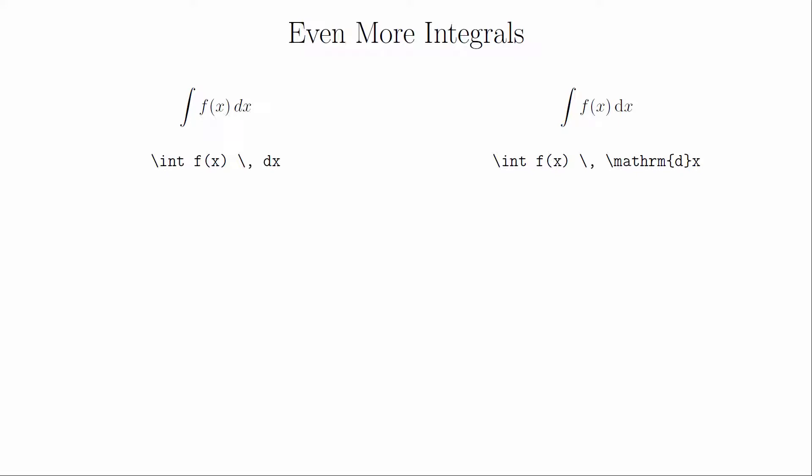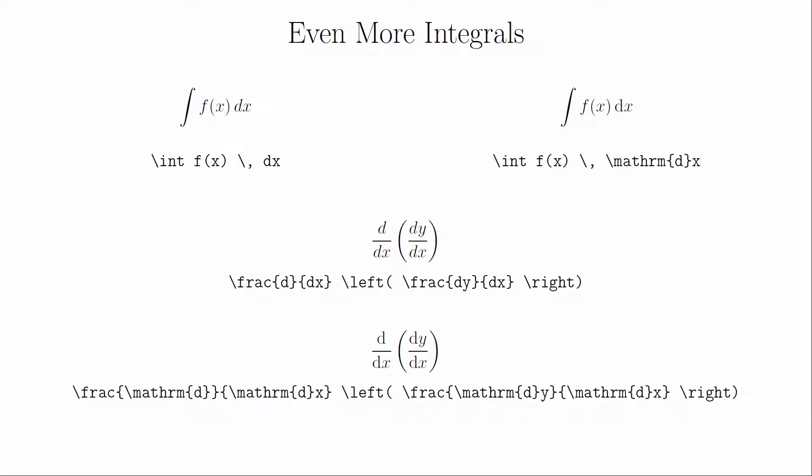The second notational quirk is that some people prefer the differential D to be in Roman font to distinguish it from the variable D. Here they are side by side. The upright D is created explicitly by calling mathrm. I personally don't have an issue with this, but you'll find that some people can be very meticulous about those Ds. In the video on basic customizations, you will learn how to create a shortcut for this command to save yourself some typing. Those shortcuts are particularly helpful when working with Leibniz notation for derivatives, because typing this repeatedly can become quite annoying after a while.